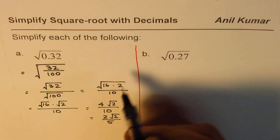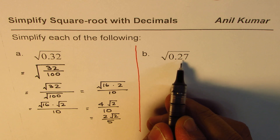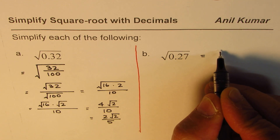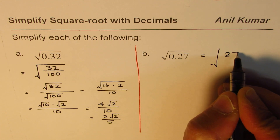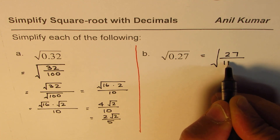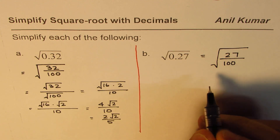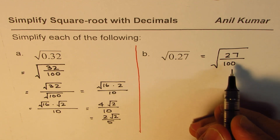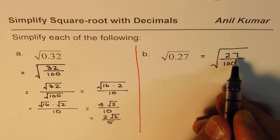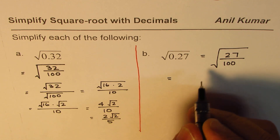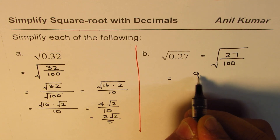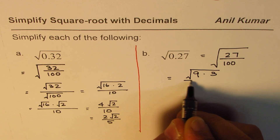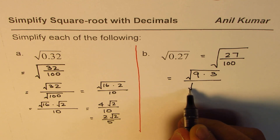The first step, as we learned, is to write the decimal in the form of a fraction. So we write square root of 0.27 as square root of 27 over 100 — that is 0.27 in terms of fractions. Now 27 can be written as 9 times 3. Since 9 is a perfect square, we choose 9. So 9 times 3 equals 27, which goes in the numerator, and the denominator is square root of 100.